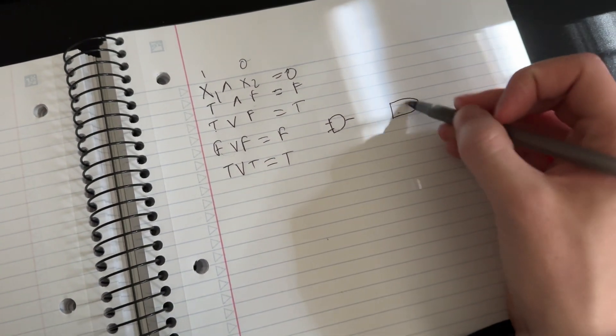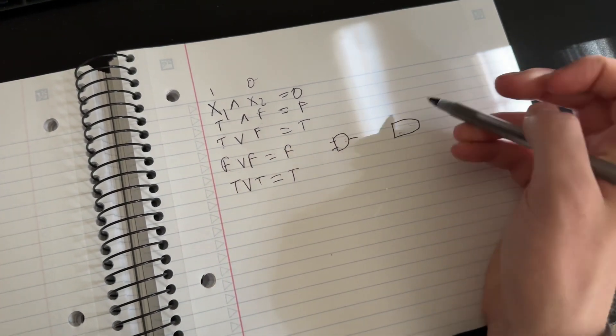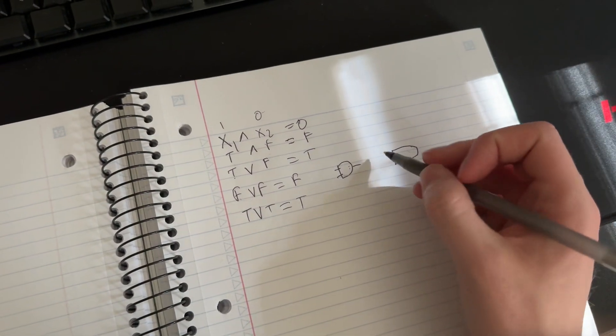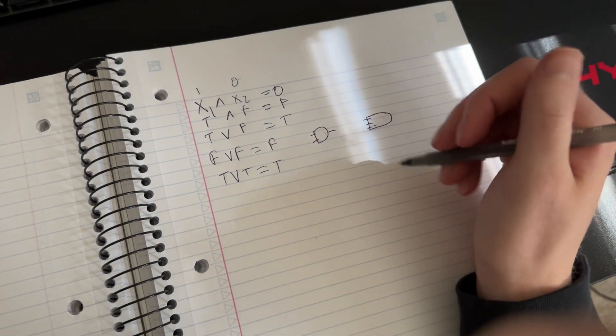I usually draw mine like a D and not a big fat toenail. But you can generally have two or three inputs on your and gates.